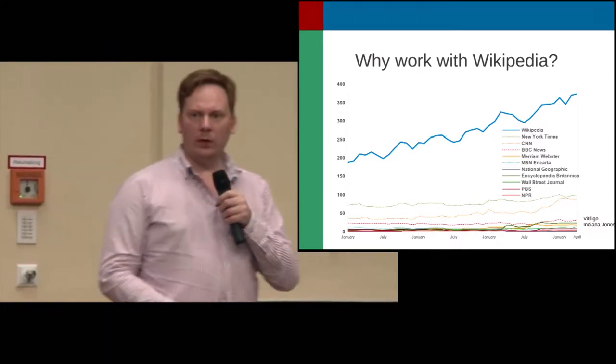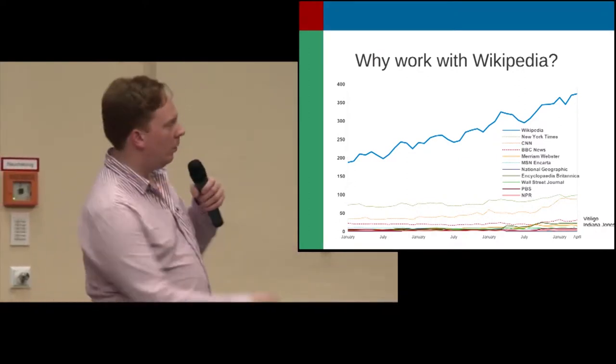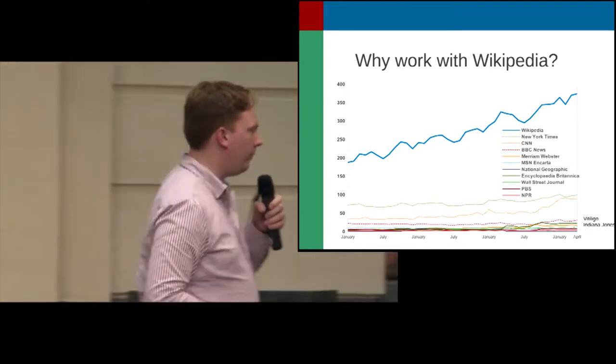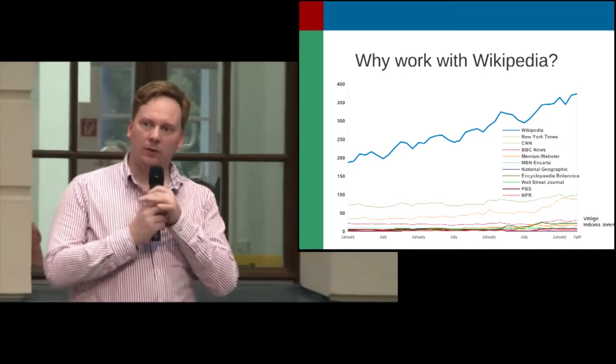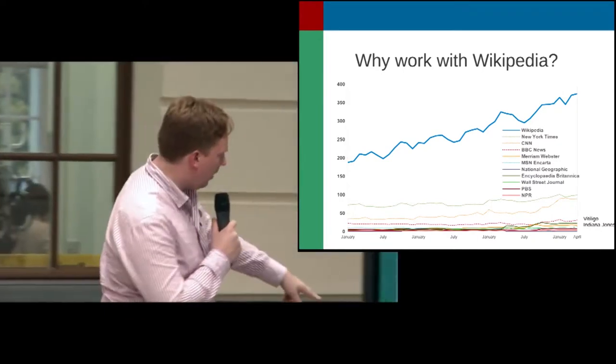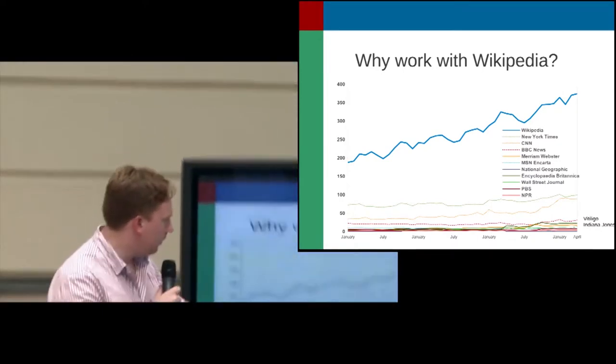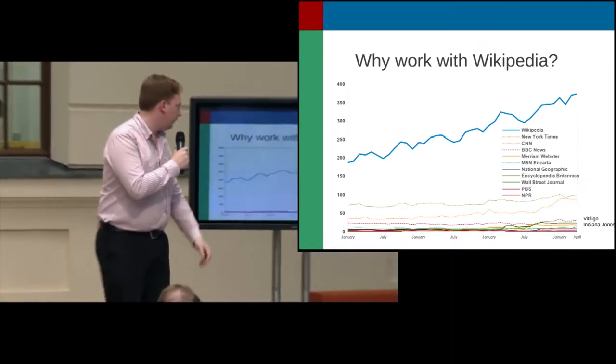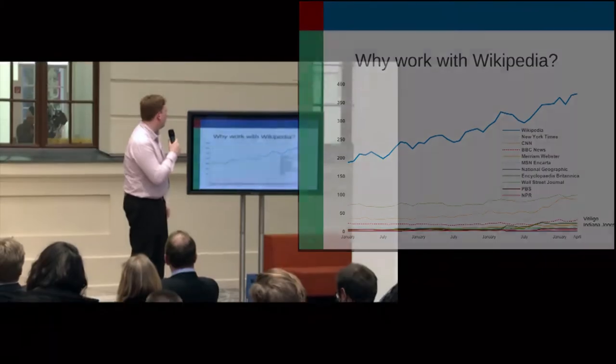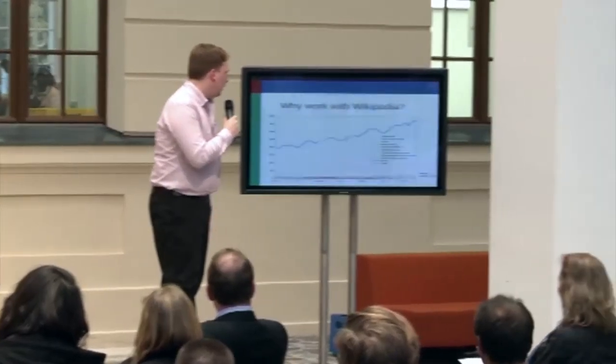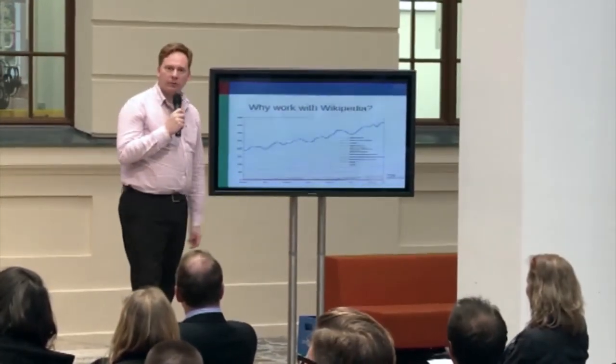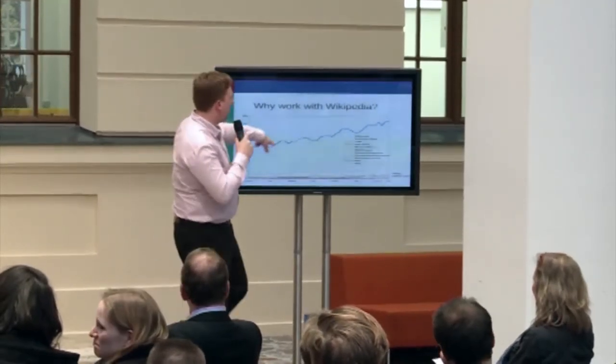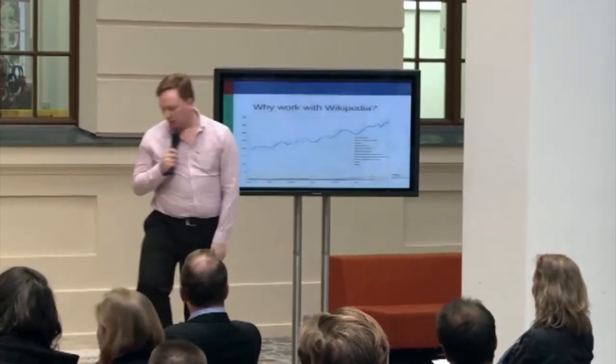So, why work with Wikipedia? Well, here's one reason. I don't know if you can see the graph here, so I'll explain it a little bit to you. At the bottom here of this table, there's a few squiggly lines. And it's the New York Times, it's CNN, it's BBC News, it's Merriam-Webster, it's MSN and Carta, if anybody remembers that. And then there's Wikipedia, and it's way, way above all the others.